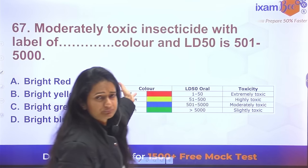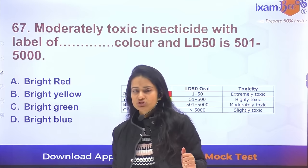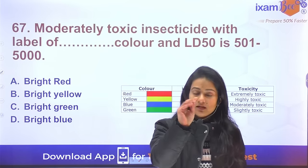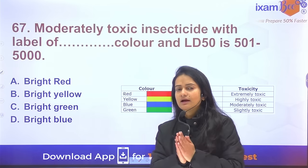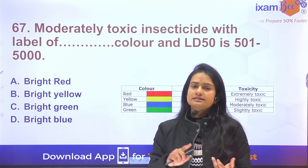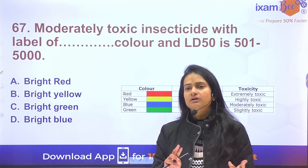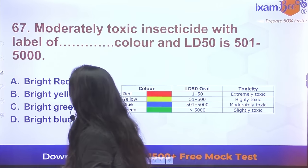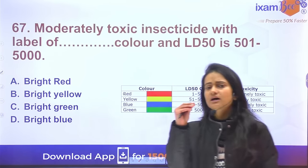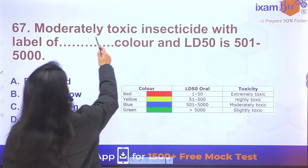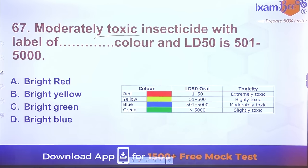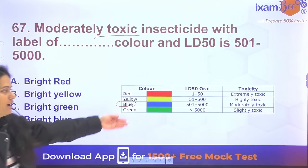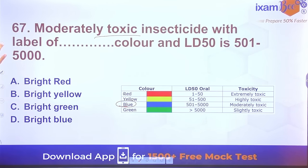Question 67: On pesticide labels, if the label is green colored, what does it mean? Green label means the pesticide is slightly toxic. Blue label indicates moderately toxic. This was also asked in NFL exam. LD50 dose classification is important to know for each toxicity level.